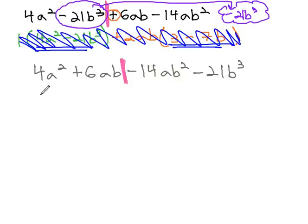On the left side, the GCF is 2a. We're now left with 2a plus 3b.